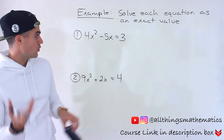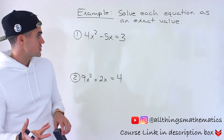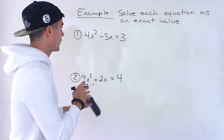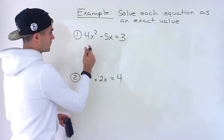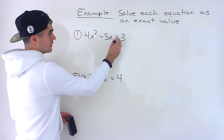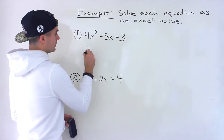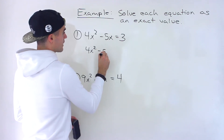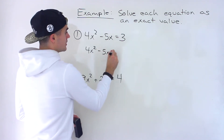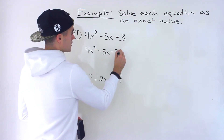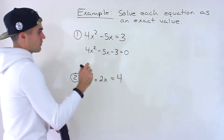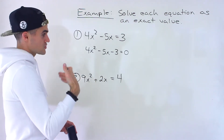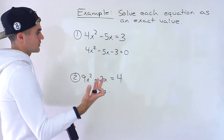Notice that they're both quadratic equations. So the first thing we need to do is bring everything to one side. Starting with number one, notice we could bring the three over and we'd end up with 4x² - 5x - 3 = 0. Now, always with a quadratic equation, the first thing I look for is: can we factor?